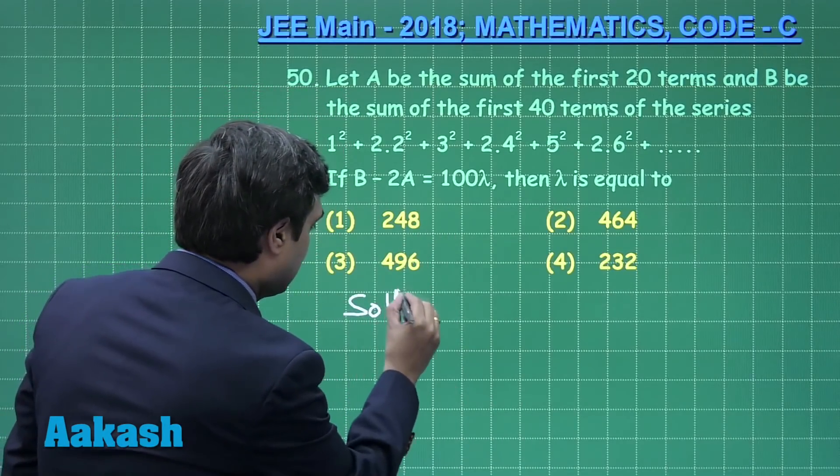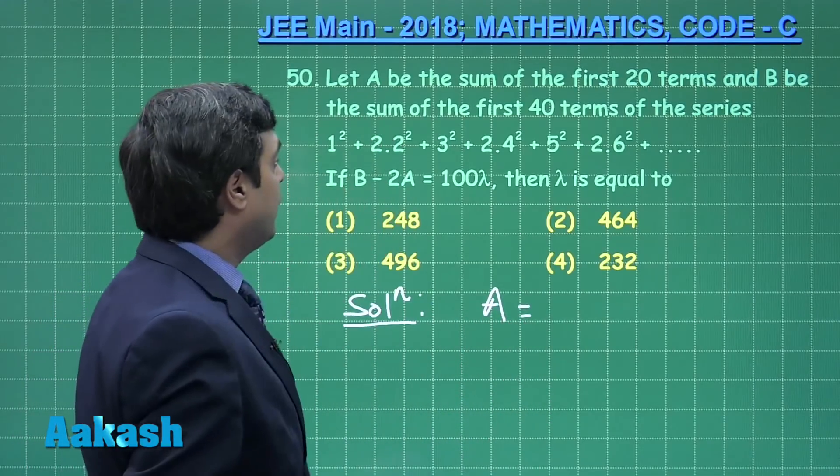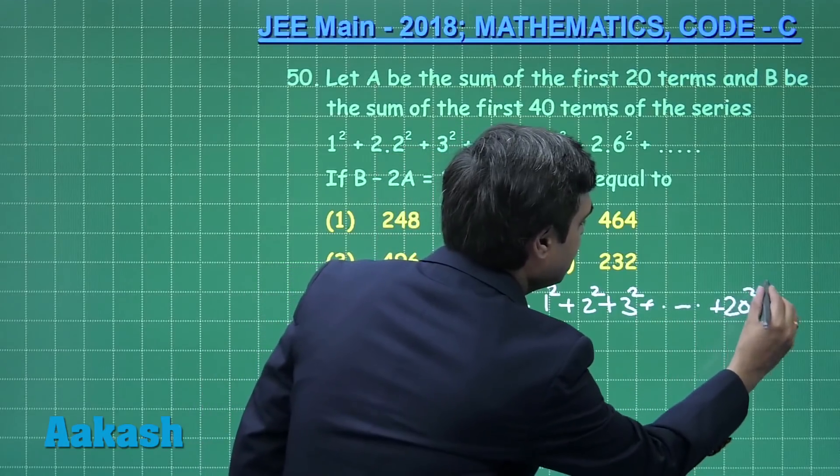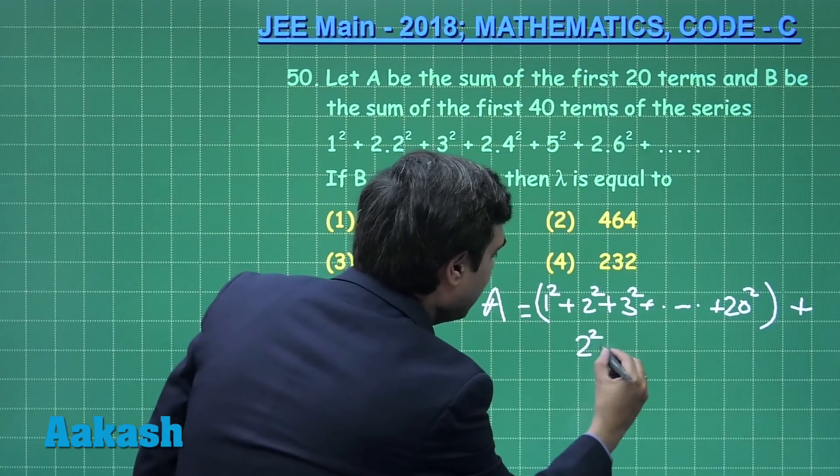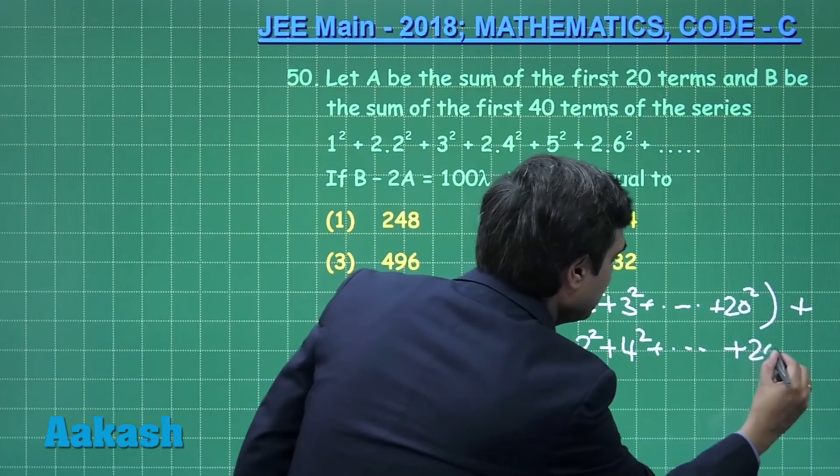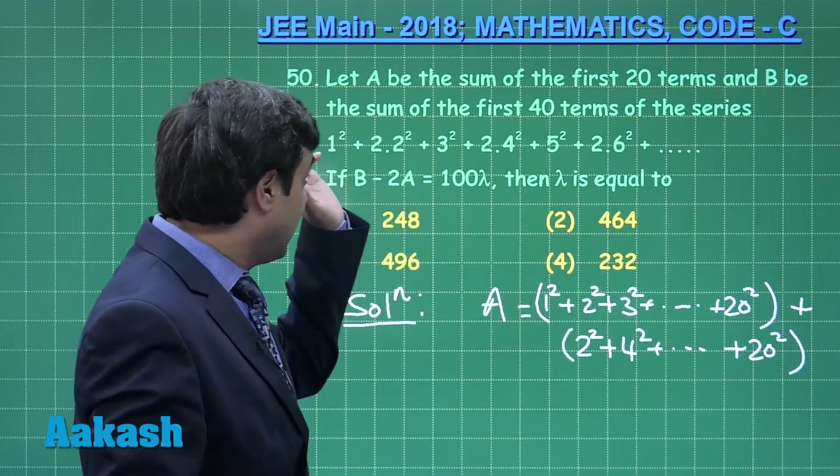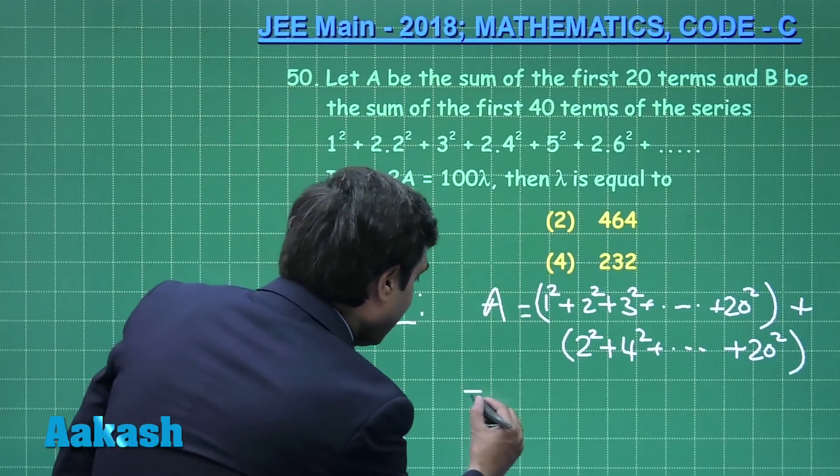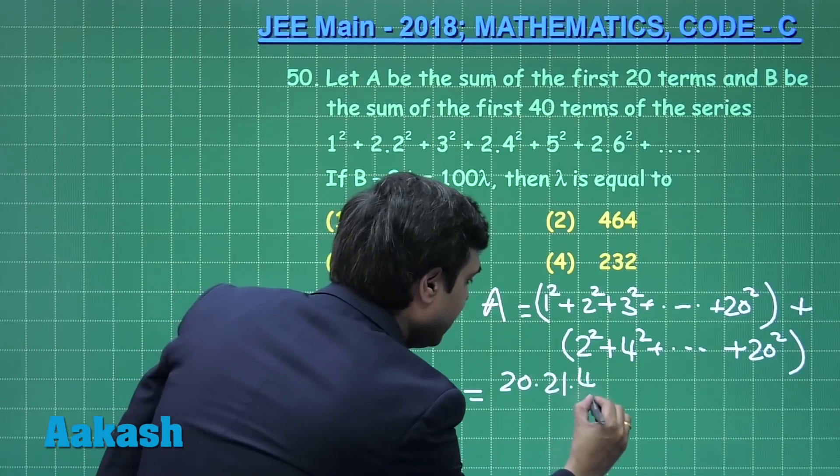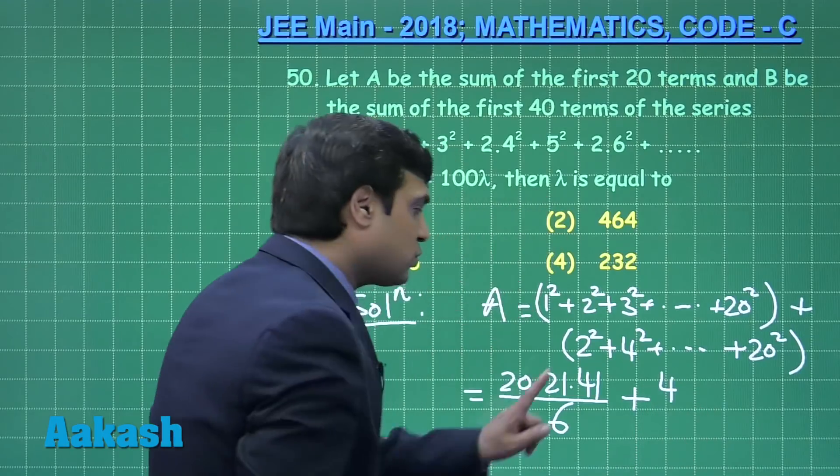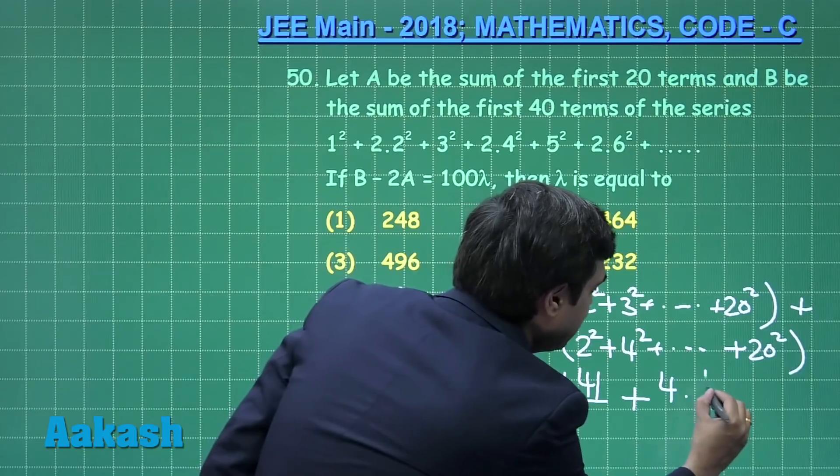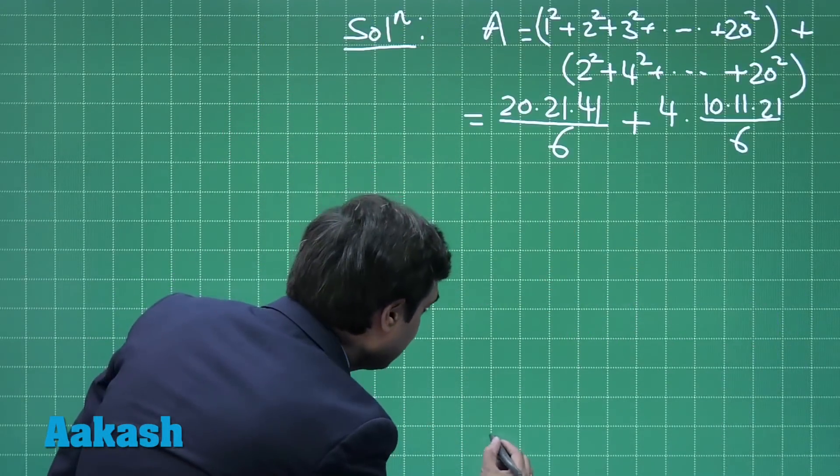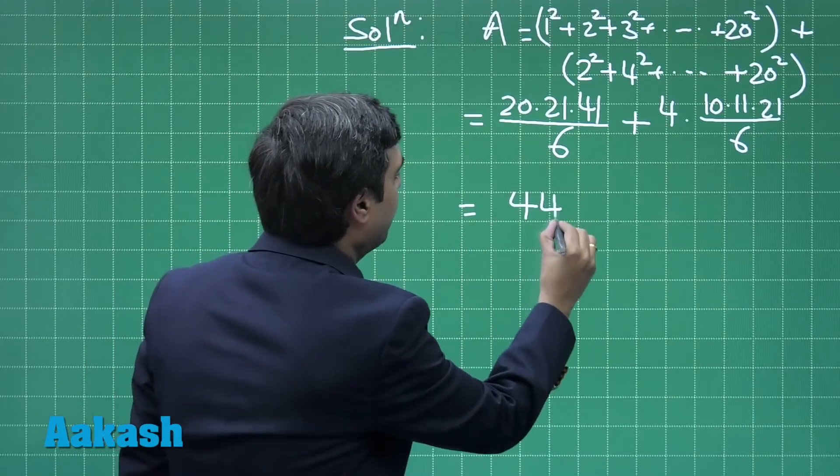Starting with finding the value of A: it is equal to 1² + 2² + 3² up to 20 terms plus 2(2² + 4² + ... + 20²). Simplifying, this is 20(21)(41)/6 + 2²·10(11)(21)/6. Simplifying this one, we get equals 4410.